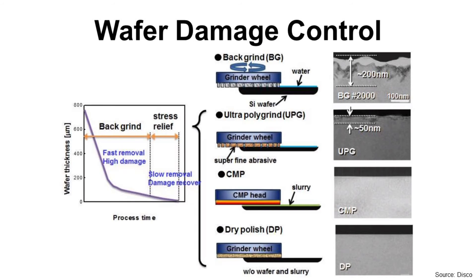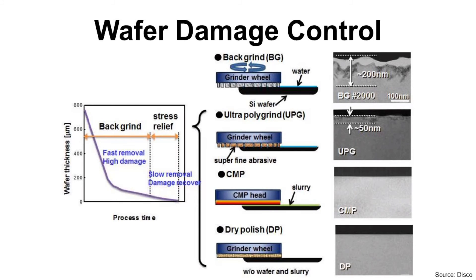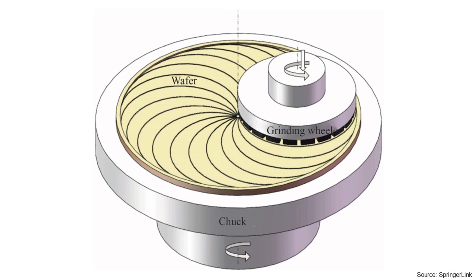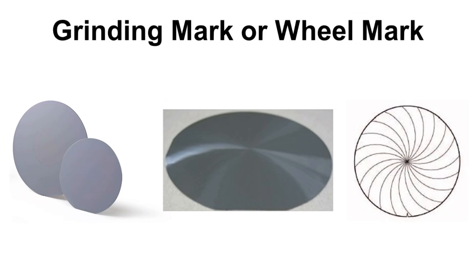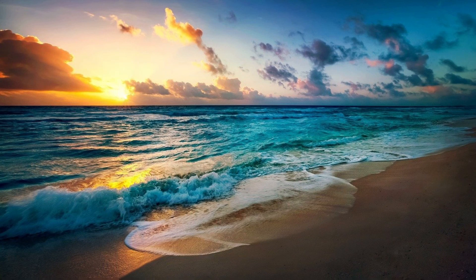Wafer backgrinding starts with coarse grinding to grind fast, then fine grinding follows to minimize damage to the wafer surface. This cross-section image of the wafer shows the degrees of surface damage. It also shows CMP and dry polishing, but those will not be covered in this video. In summary, during wafer backgrinding, the wafer rotates at the bottom via the chuck table, and the grinding wheel rotates at the top via the spindle. At the same time, the spindle with the grinding wheel moves downward. The abrasive on the grinding wheel actually grinds the wafer. If you see a spider pattern on the wafer backside, it is a grinding mark or wheel mark.